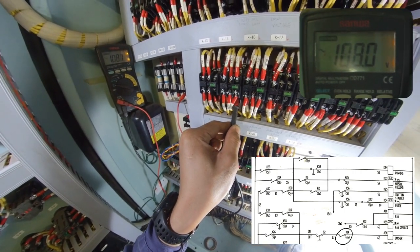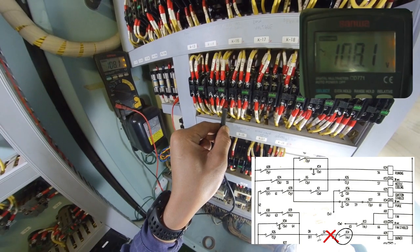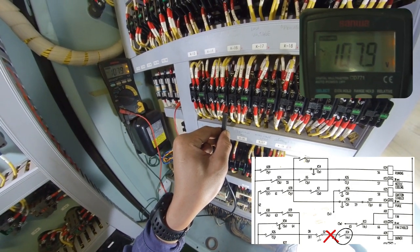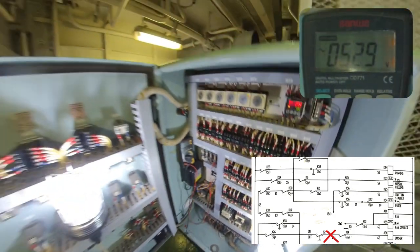At this part of the circuit, the voltmeter reading reads source voltage. That means the circuit is already open after this point.